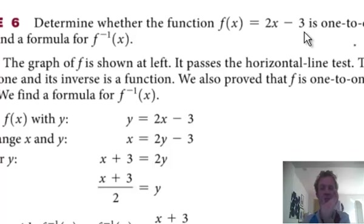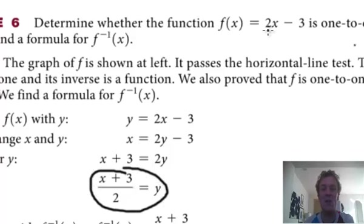So instead of doubling the x and taking away a 3, add the 3 and halve it. Divide it by 2. And that's what it's happened down here. Look at that. Add a 3, divide by 2.